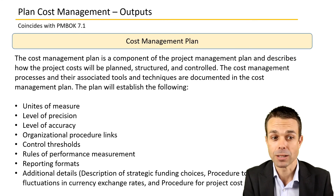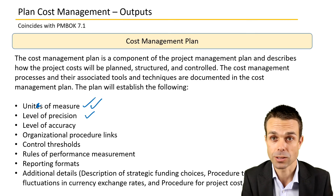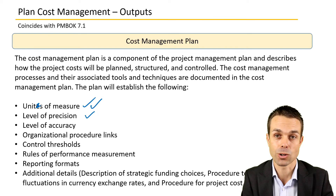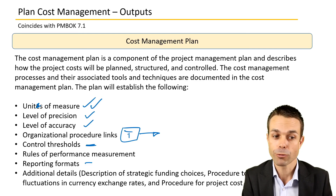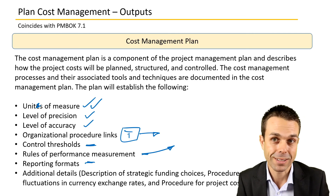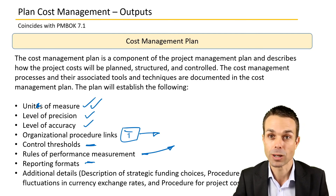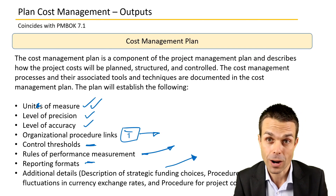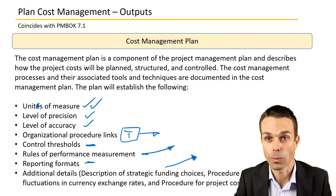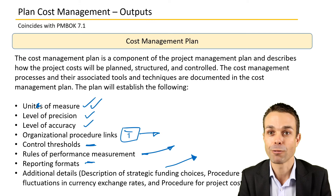The output for Planning Cost Management is the cost management plan itself. It will establish: units of measure, level of precision (whether accurate or still an order-of-magnitude estimate), level of accuracy, organizational procedure links including templates and formal processes, control thresholds, reporting formats, rules of performance measurement, and additional details such as strategic funding choices, and procedures to account for fluctuations in currency exchange rates — for example, whether to hedge currency or include a contingency in the contract for a long project. These are all the details as part of Planning Cost Management from the PMBOK.